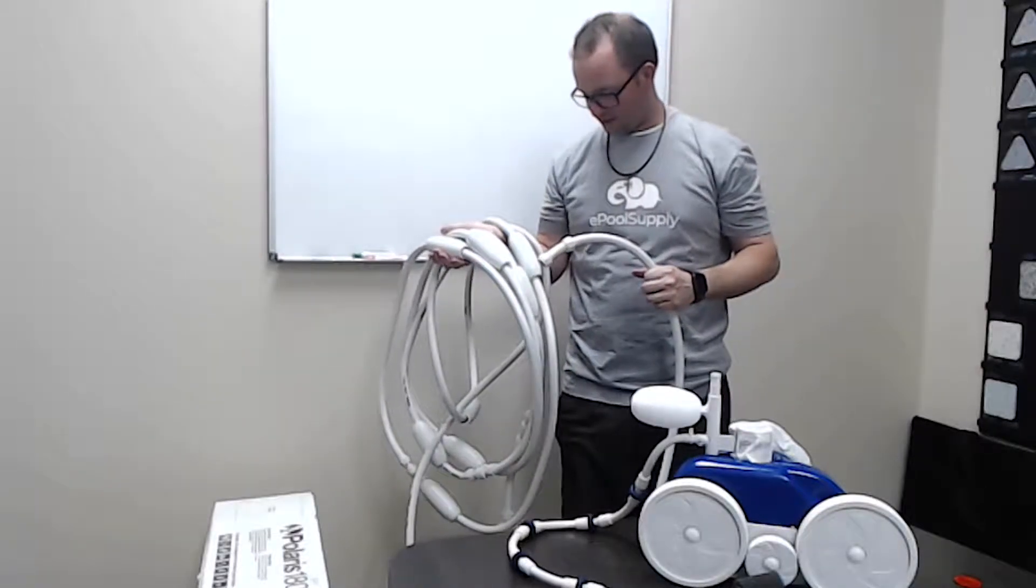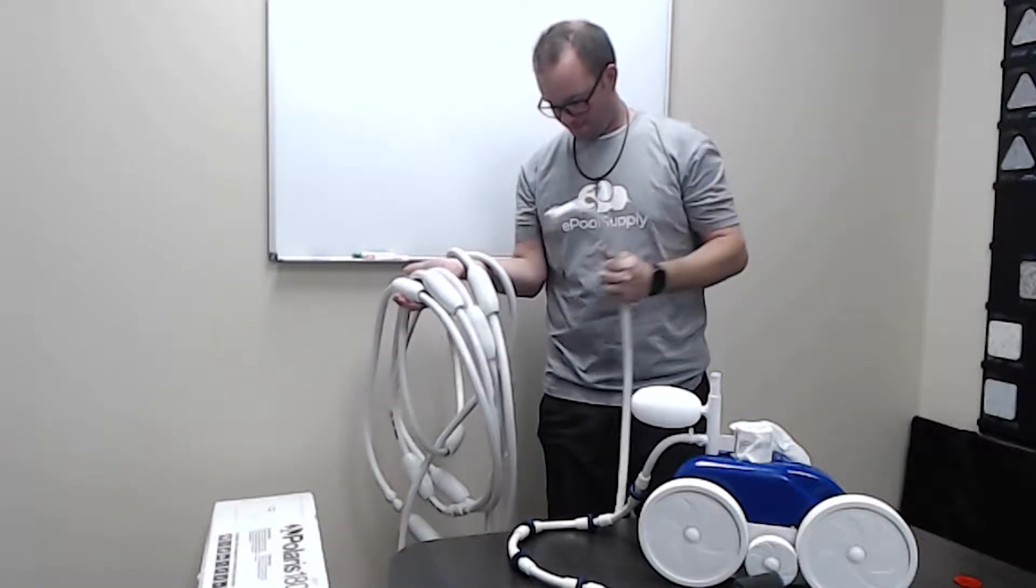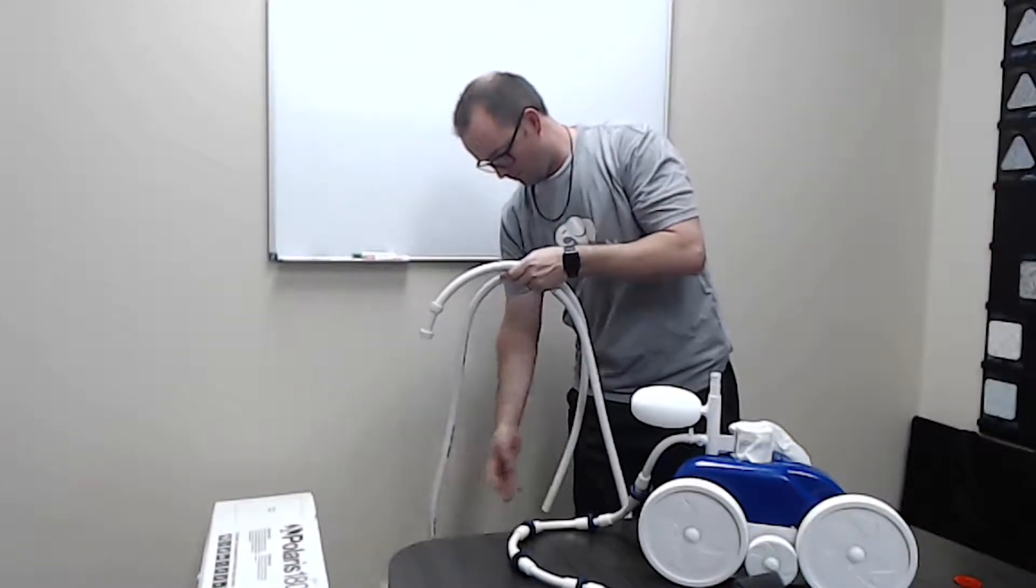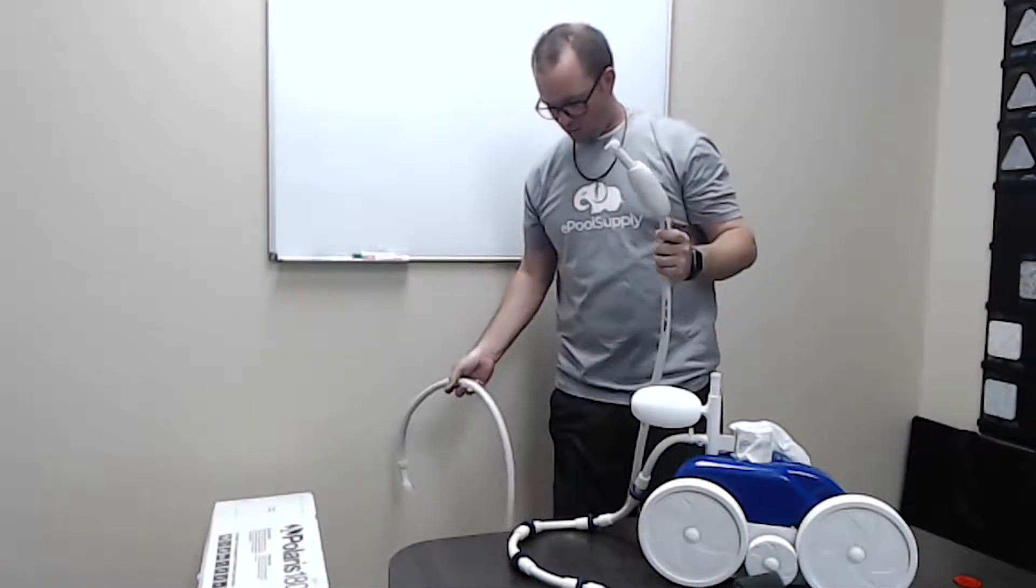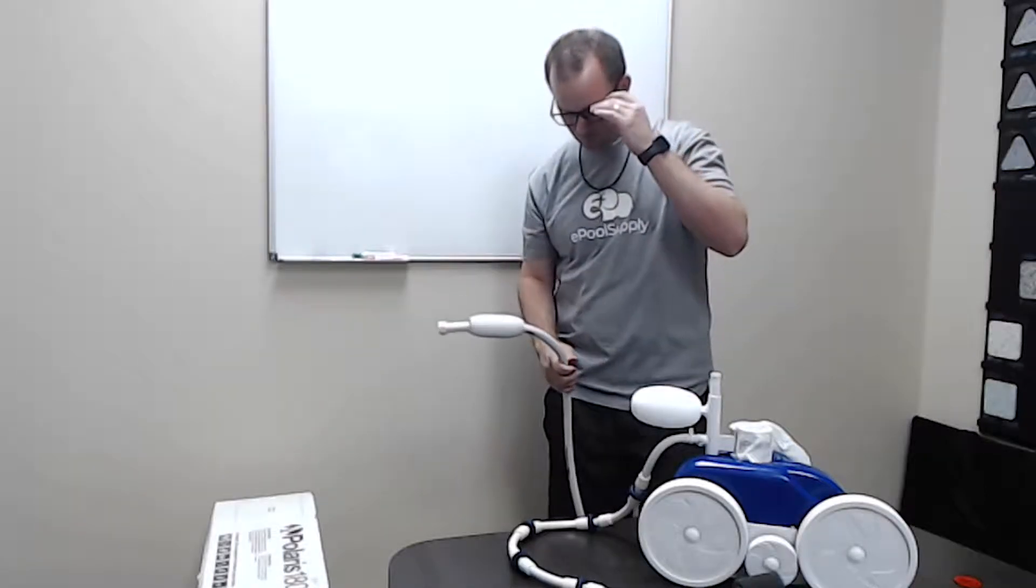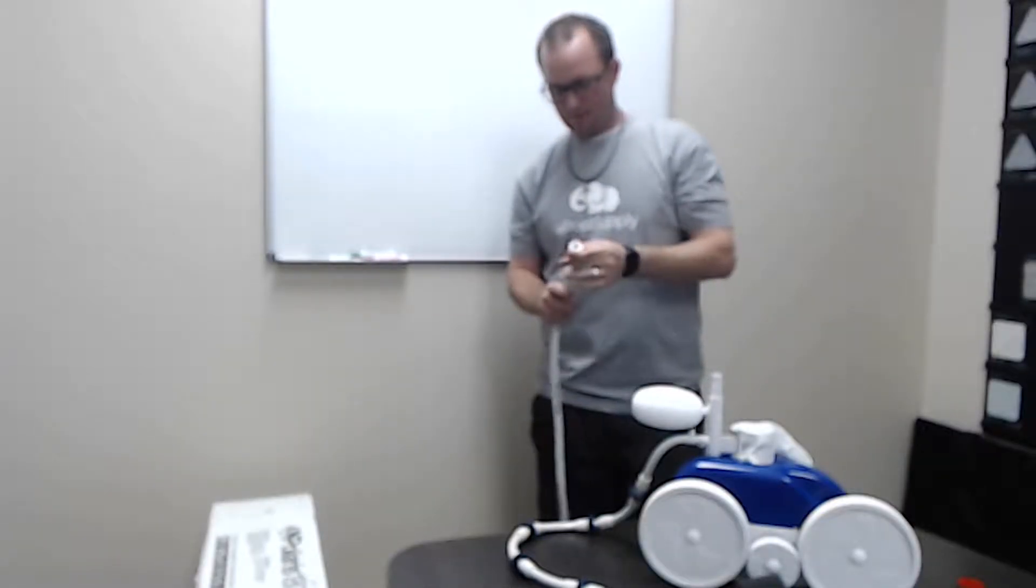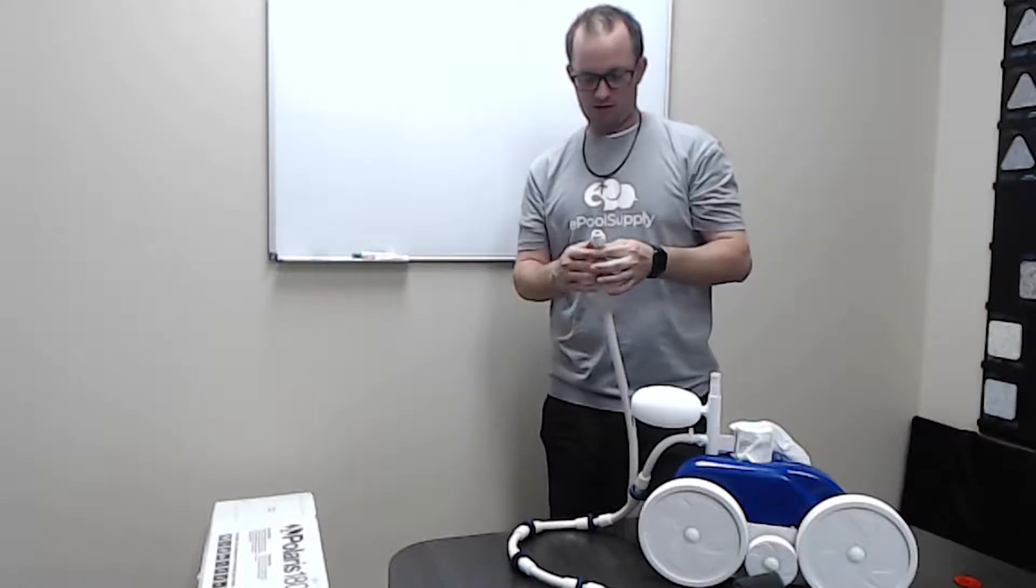Pretty nifty. It's got 30 feet of hose. You got your leader hose. There's a lot of hoses in here. There are tabs on both sides of the leader hose. One end goes into the wall and one goes into the pool cleaner.